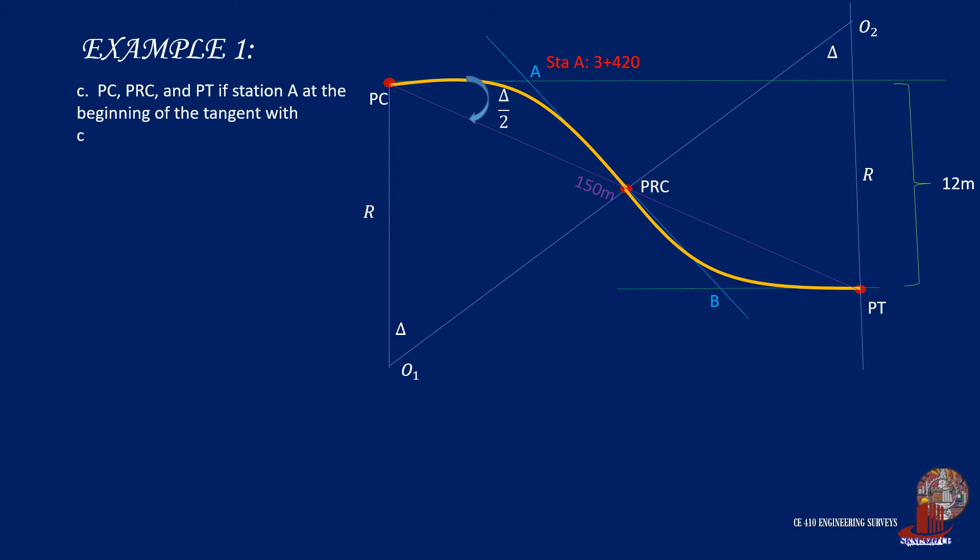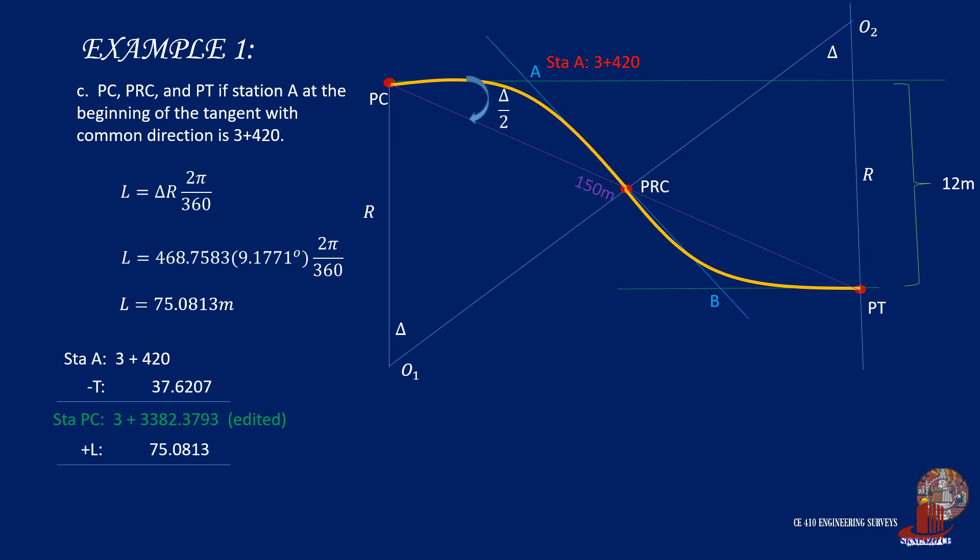Now with the stationing when point A is at 3 plus 420, take the length of the curve with the formula L is equal to delta R times the conversion 2 pi all over 360 degrees. With the values of the parameters already known, we can solve for L as 75.0813 meters. So starting with station A as 3 plus 420, subtract T of 37.6207 which can locate station of PC as 3 plus 457.6207. Then add the length of the curve which is 75.0813 which shows the station of PRC which is at 3 plus 532.7020. Then add again the length of the second curve which is still 75.0813 giving the station of PT as 3 plus 607.7833.